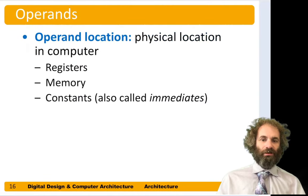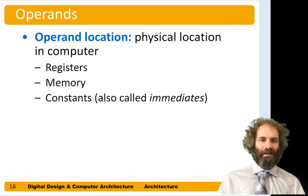Recall from our example of ADD A equals B plus C, that A, B, and C are operands — there were two sources and a destination. They have to be stored physically somewhere in the computer, and three choices of where we can keep operands are in registers, in memory, or as constants.